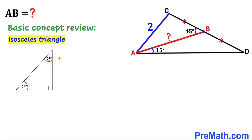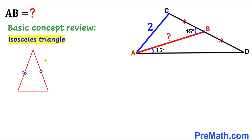Now let's recall the 45-45-90 special triangle. This angle is 45 degrees, this angle is 45 degrees, and this is our 90 degree angle — such a triangle is called an isosceles triangle. So therefore this side length is going to be equal to this side length: if this side length is A units then this side length is A units as well. In this isosceles triangle, the angle opposite to one equal side is congruent to the angle opposite to the other equal side — in other words, these two base angles are congruent.